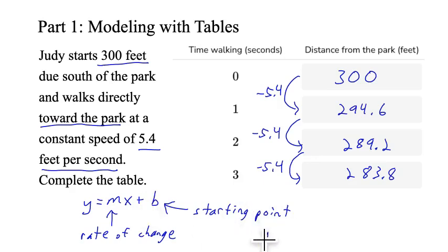So in this case, our rate of change is negative 5.4 because that's how much closer she's getting to the park each second. So it's negative 5.4 times the number of seconds plus 300, our starting point. This equation is going to subtract 5.4 for every second that she walks.